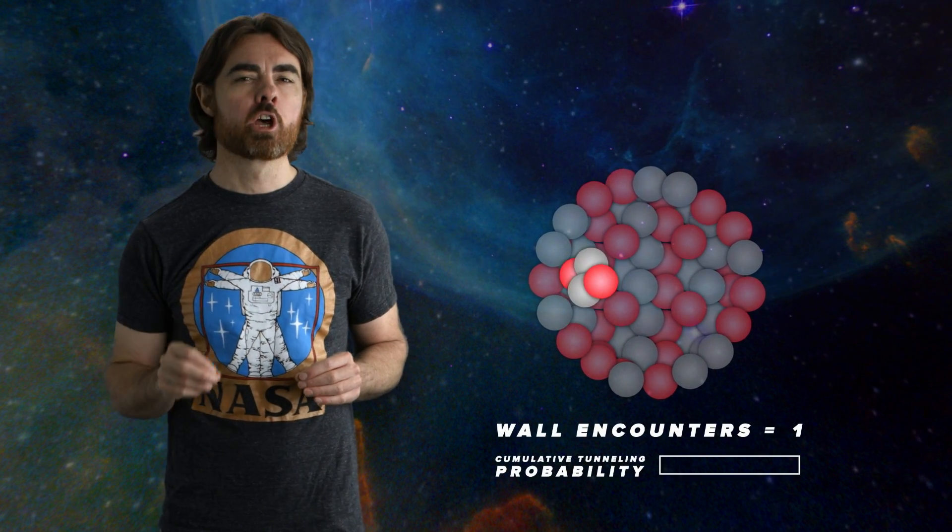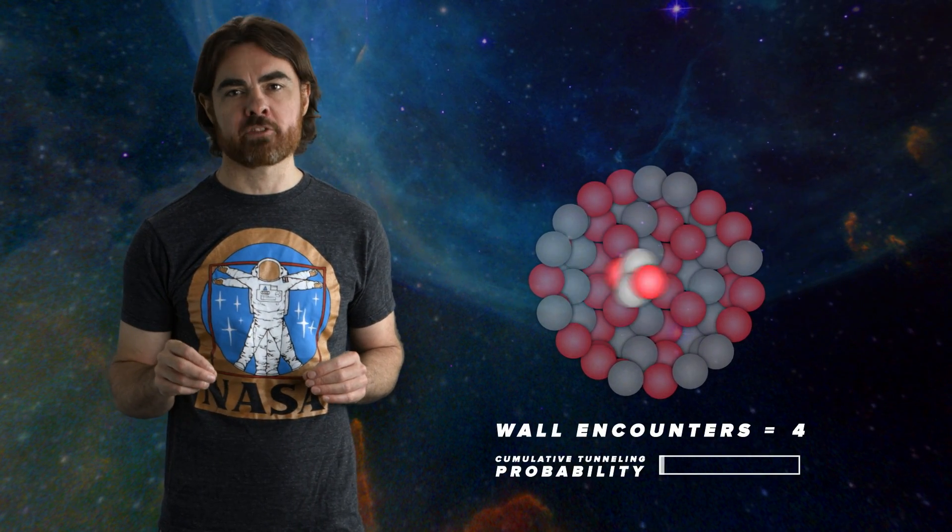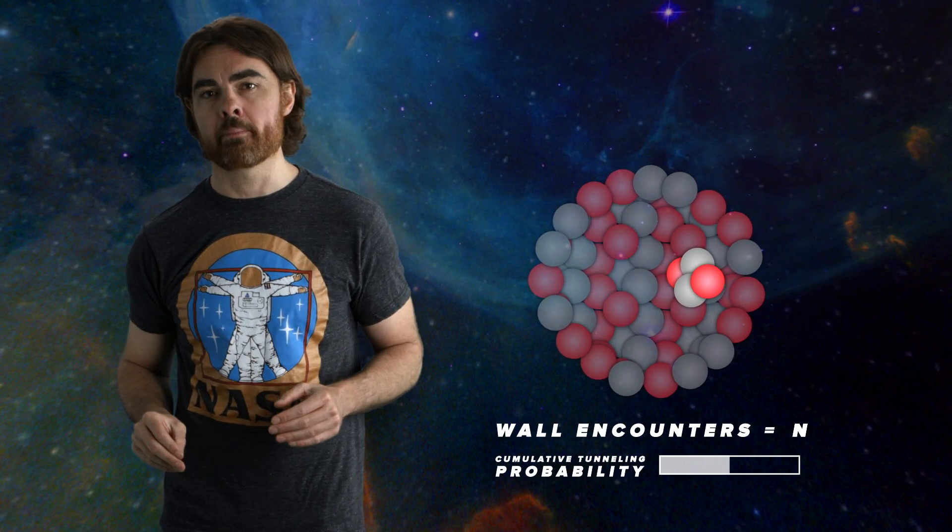OK. For our last challenge question, we asked you to calculate the probability that an alpha particle, so a package of two protons and two neutrons, would tunnel out of the nucleus of a polonium-212 atom, causing the atom's radioactive decay. OK. You had the half-life. So the average time for the decay of a polonium-212 nucleus is 0.3 microseconds. You needed to figure out how many times the alpha particle would encounter the walls of the nucleus in this time.